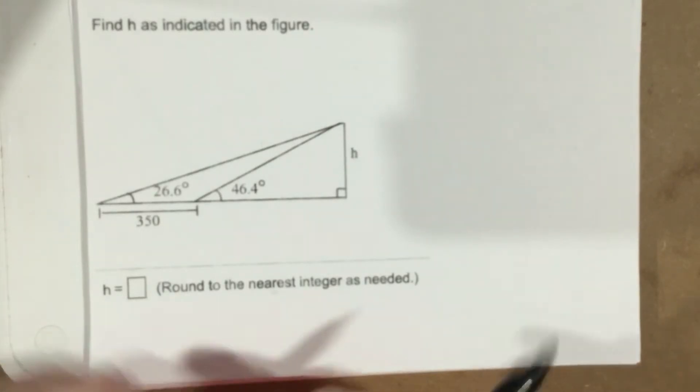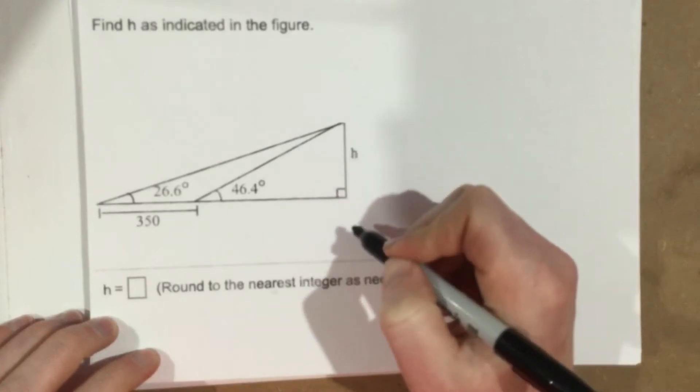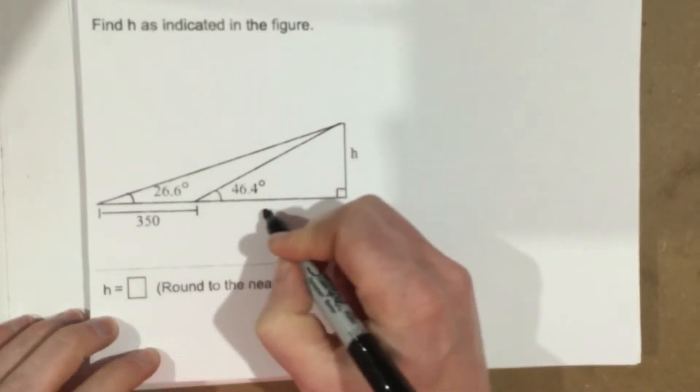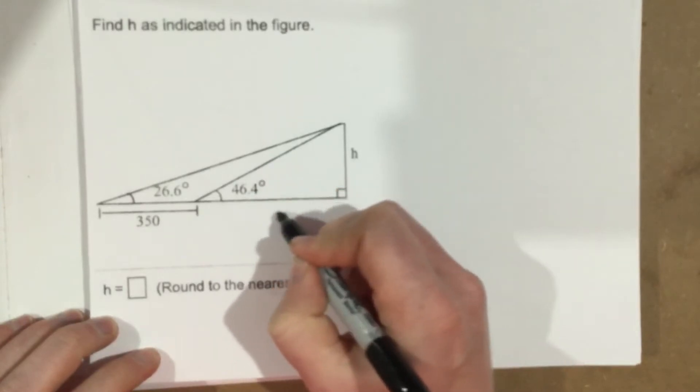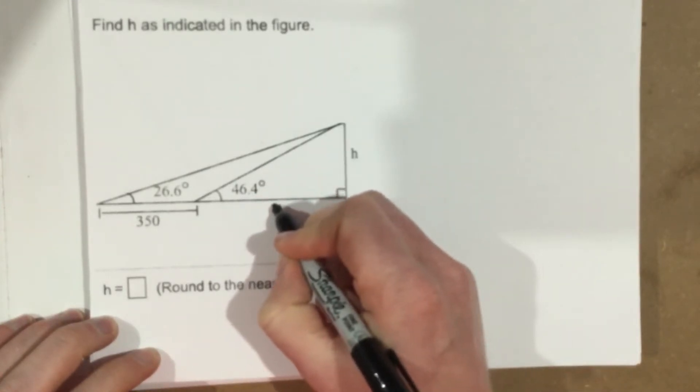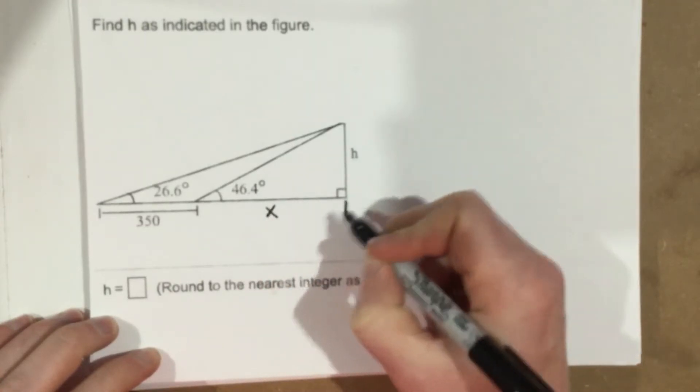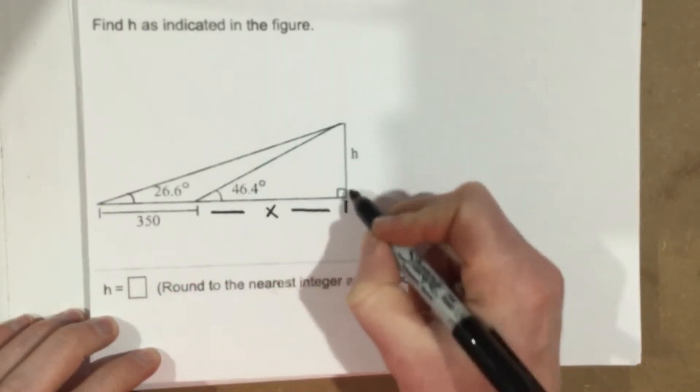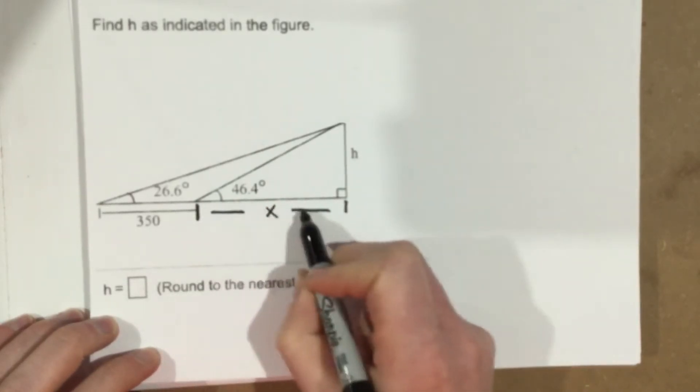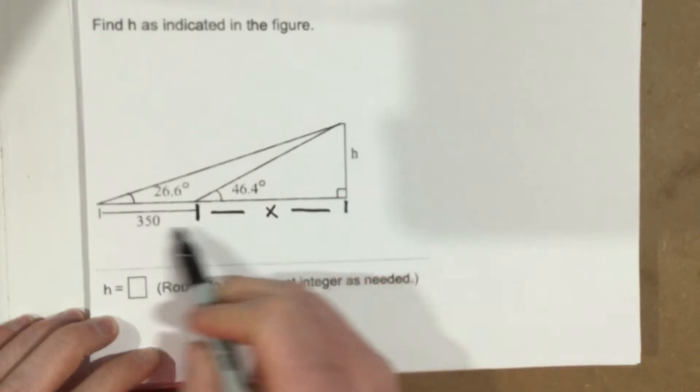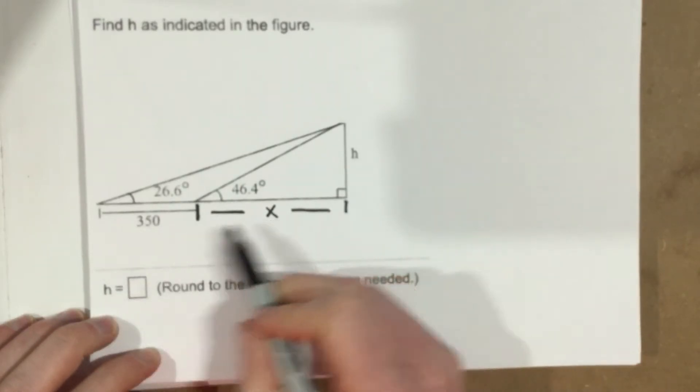Now in order to find h, I'm probably going to need to know this side right here or this side here. This side here seems like it's probably the easiest side to find. So I'm going to put an x here and we're going to call this the length from this end to this spot right here. So x is this distance. So the total distance for our outside triangle would be x plus 350.